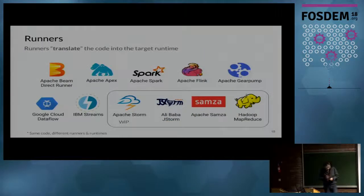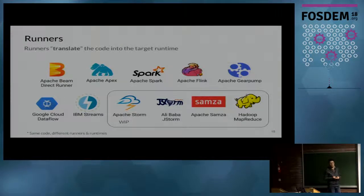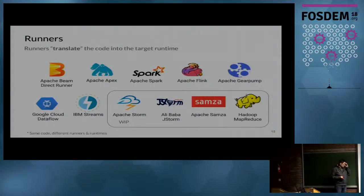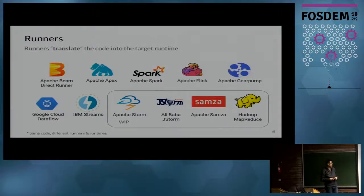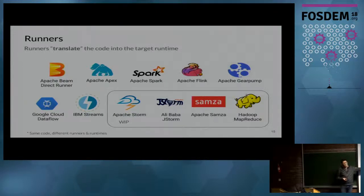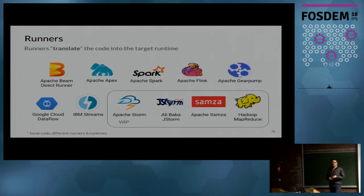For me, the more interesting part is the runners. Today we have all the systems that are supported or partially supported by Beam. Some in a highlighted box are new ones coming. Beam also offers a direct runner — a local, non-distributed runner — so you can prototype your pipelines on your computer and test that they are valid.